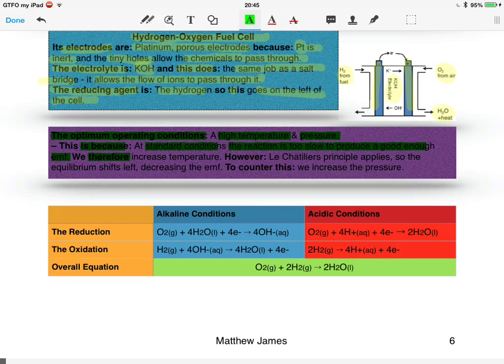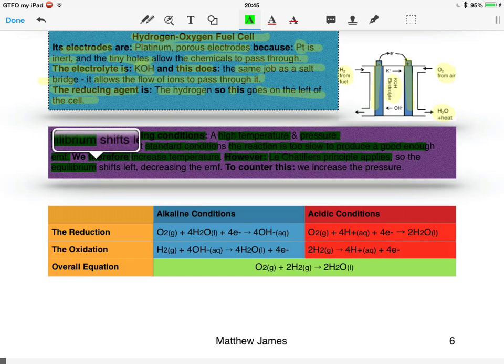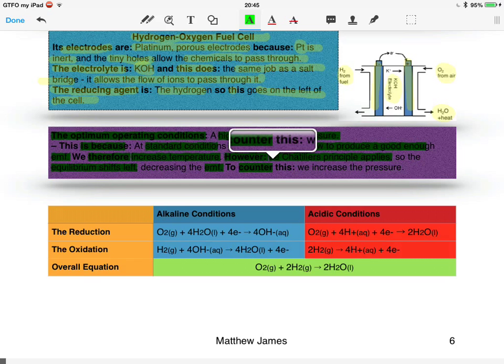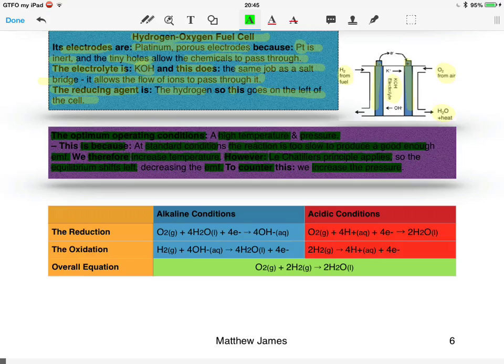Therefore, we increase the temperature because this increases the kinetic energy, which makes the reaction happen quicker. However, Le Chatelier's principle then applies, and the equilibrium will shift to the left, which actually decreases the EMF. What we do to counter this is increase the pressure, because that balances all the effects, and we have a higher EMF but also a viable reaction time.